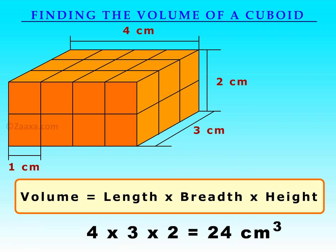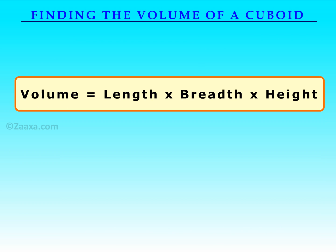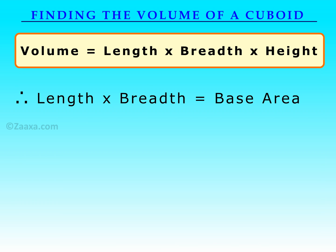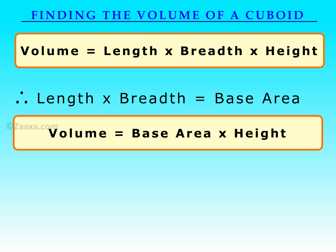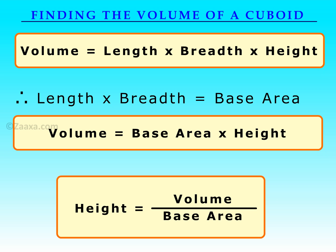From this example, we see that the volume of any cuboid is its length times breadth times height. Since length times breadth is equal to the base area of the container, we can say that volume is equal to base area times height. We can also say that height is equal to volume divided by the base area.